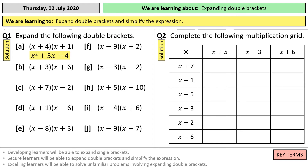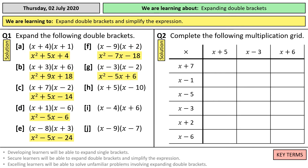The answer to question 1a is x squared plus 5x plus 4, b is x squared plus 9x plus 18, c is x squared plus 5x minus 14, d is x squared minus 5x minus 6, and e is x squared minus 5x minus 24. The answer to f is x squared minus 7x minus 18, g is x squared minus 5x plus 6 — so we've got negative times a negative there giving us a positive answer. Then x squared minus 5x minus 50, x squared minus 2x minus 24, x squared plus 2x minus 24, and x squared minus 16x plus 63.